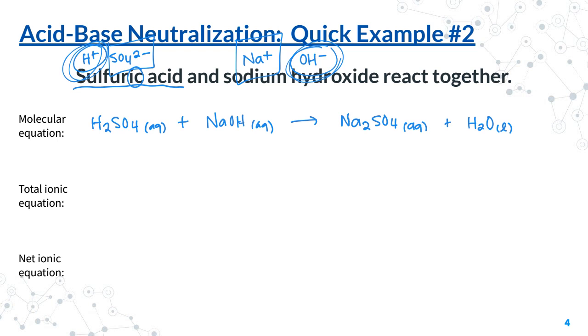I'm going to go ahead and balance this. I see my Hs are not working for me. But I know that I need to have two NAs on the reactant side. So I'm going to put a big two right here for my coefficient. And to balance out my resulting Hs, I'm going to have to put a two as a coefficient for the water. So there's my molecular equation.